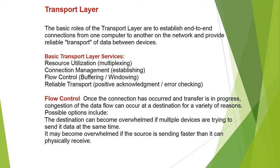The basic roles of the Transport layer are to establish end-to-end connections from one computer to another on the network and to provide reliable transport of data between devices. Basic Transport layer services include: resource utilization, multiplexing, connection management and establishing, flow control via buffering and windowing, reliable transport, positive acknowledgement, and error checking.